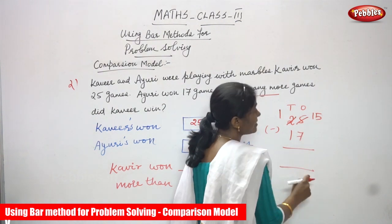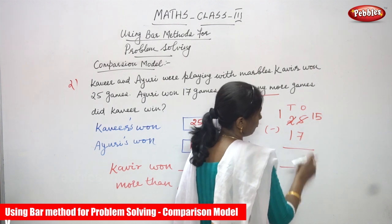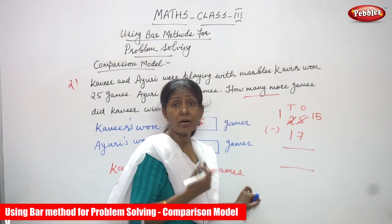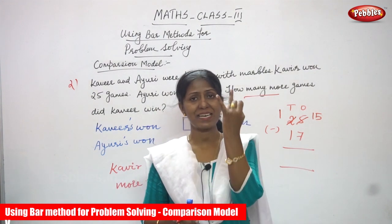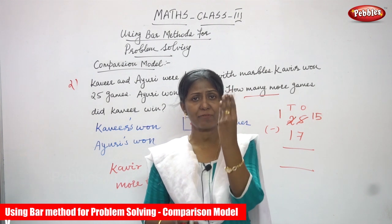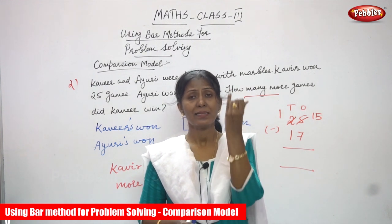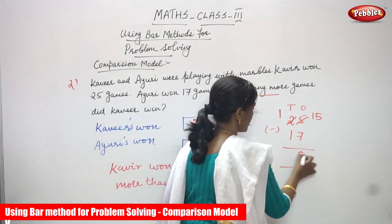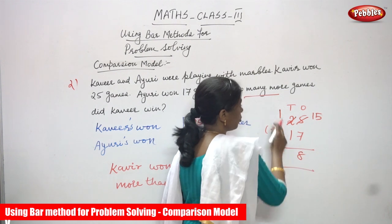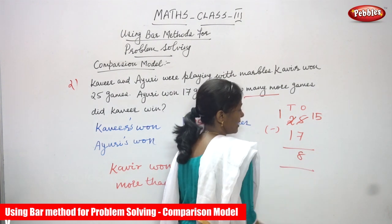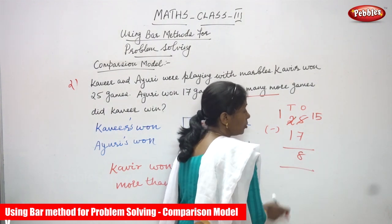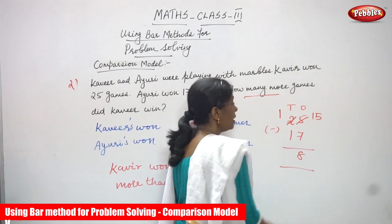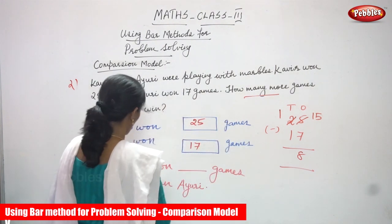Now 15 is greater than 7, so I do 15 minus 7 by counting forward from 7: 8, 9, 10, 11, 12, 13, 14, 15 — the answer is 8. Then 1 minus 1 equals 0, so no digit is written in the tens place. The answer is 8.